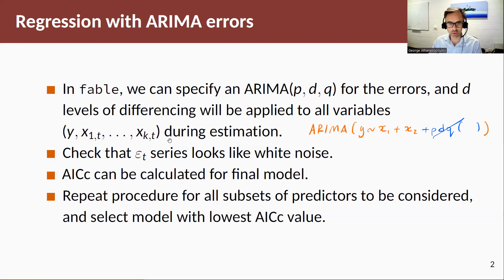Once we do that we should check our innovation residuals to make sure that they look like white noise. Then if we are happy with these, the AICc can be calculated for the final model and we can repeat the procedure for all subsets of predictors and select the model with the lowest AICc value, something that we did in Chapter 7 as well. Remember that AIC for models with different levels of differencing is not comparable.